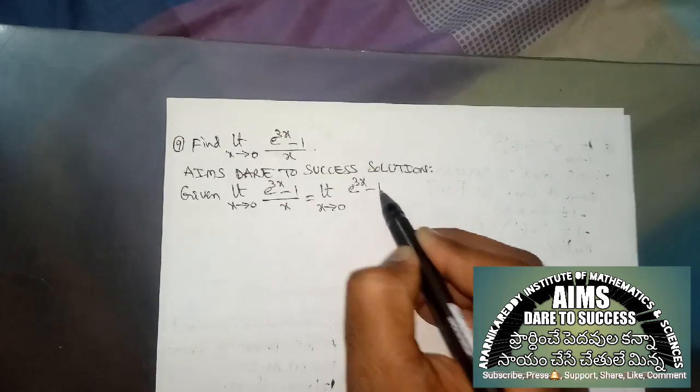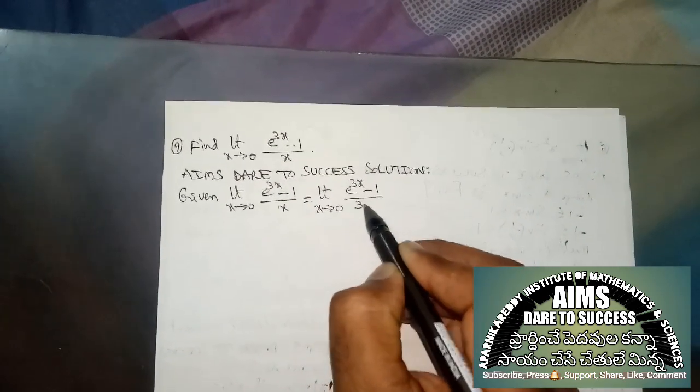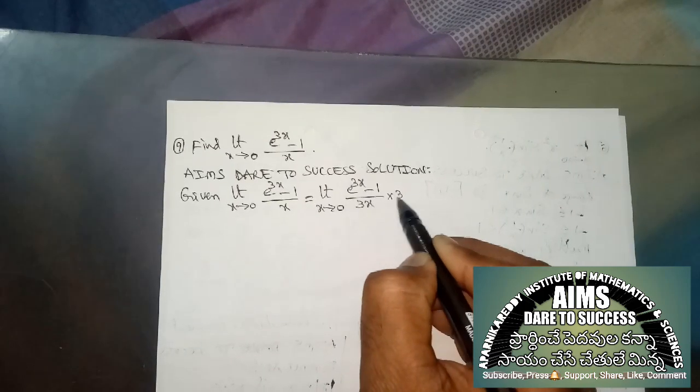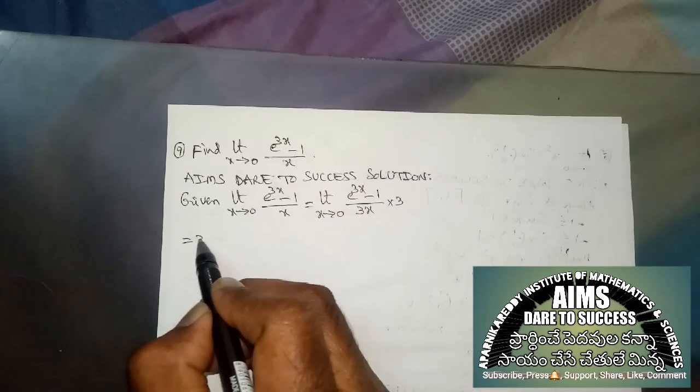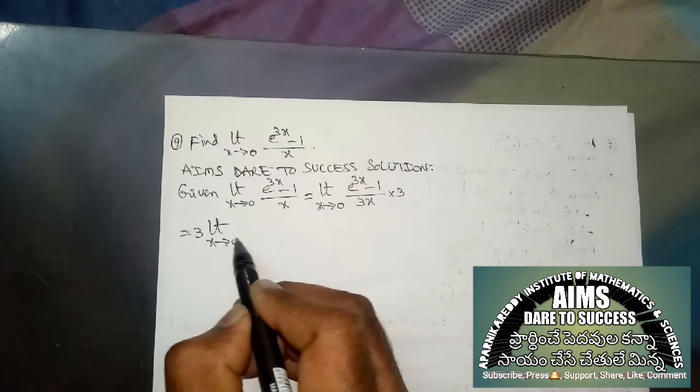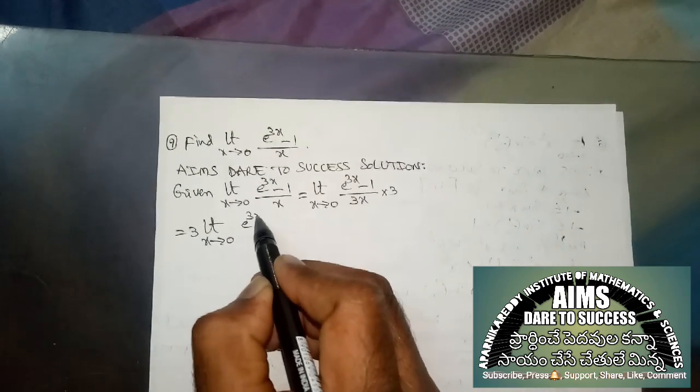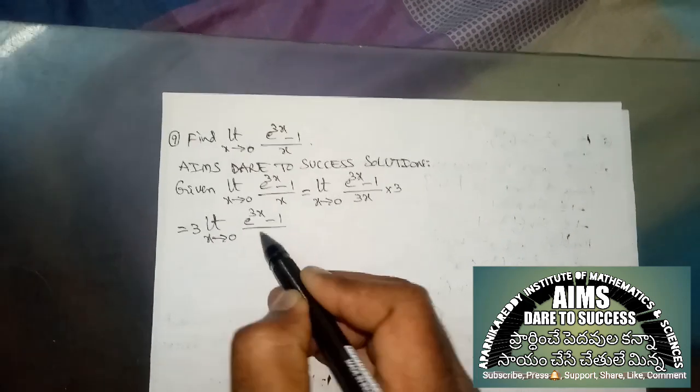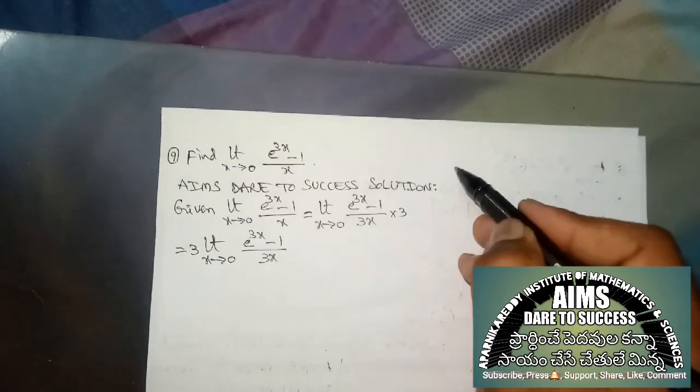We get e power 3x minus 1 by 3x into 3. So this 3 is written first: 3 times limit x tends to 0, e power 3x minus 1 by 3x. Here it is related to one more formula.